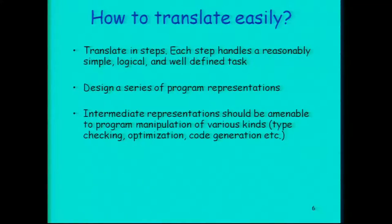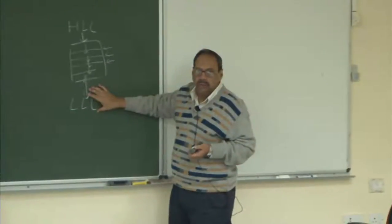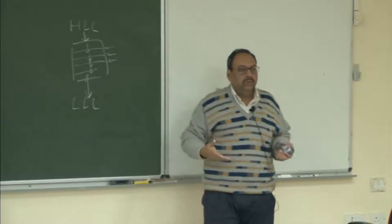What we want to do now is design a series of representations. We are really changing the representation from high level language to low level language. So if I need these small steps, I must have a representation at each step, and slowly I am just converting this representation until I reach the target. These are intermediate representations — this is our initial representation, this is the final representation, and as I move along this path, representations keep becoming closer and closer to the machine language.